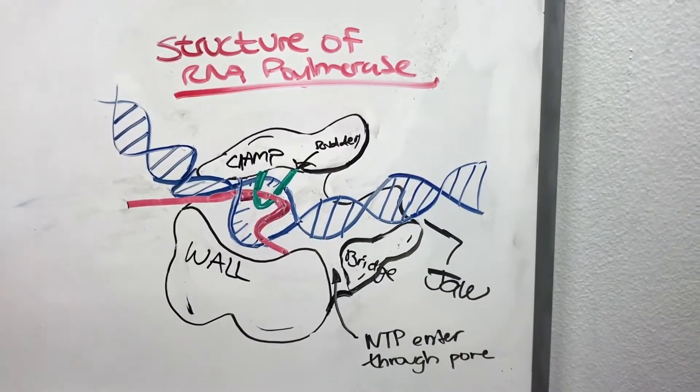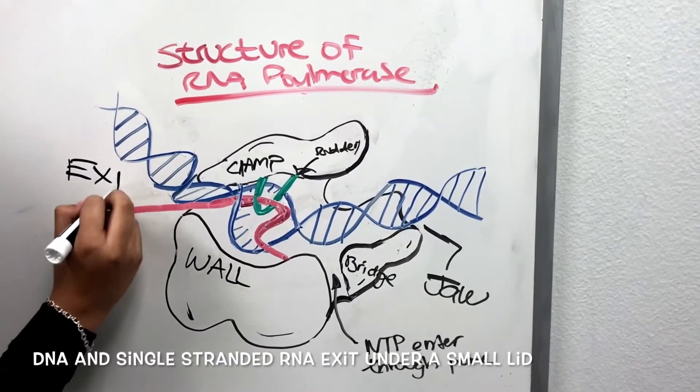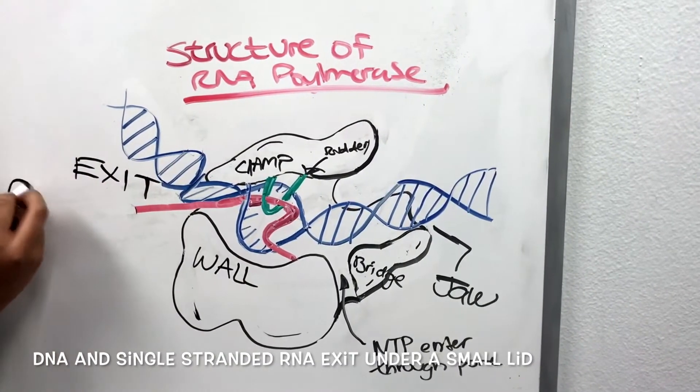And at the exit is where the DNA is traveling out as it is being forced through the lid, rewinding the DNA.